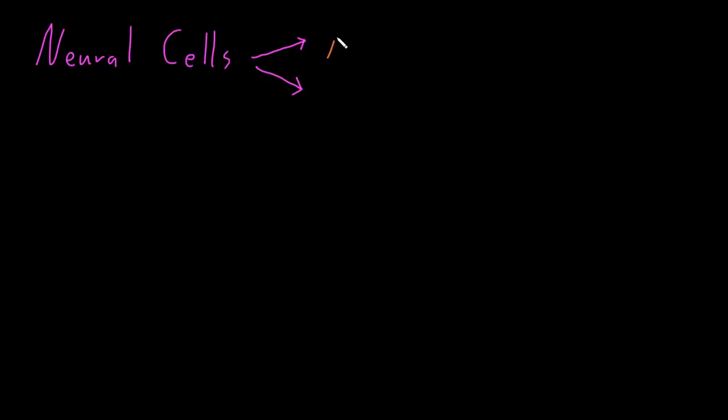Neural cells are divided into two big categories. The first are neurons, which were traditionally called nerve cells, and the second are glia. These can also be called neuroglia or glial cells. Neurons are named from a Greek word for nerve, while glia are named from a Greek word for glue, because they were once thought to do little except glue neurons together.